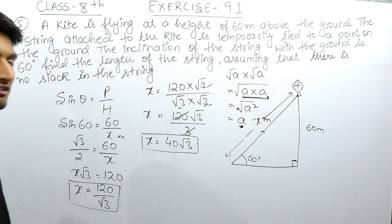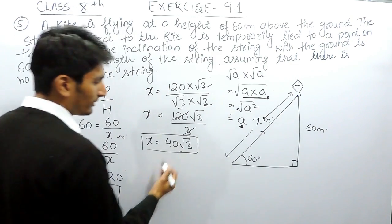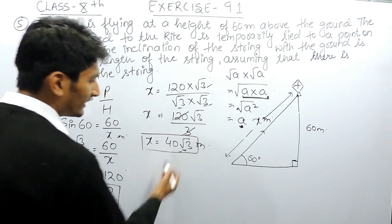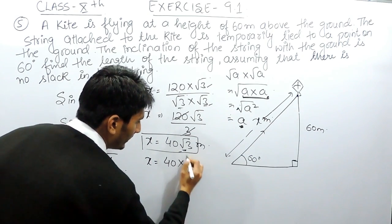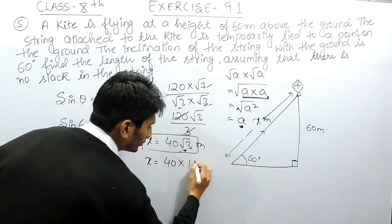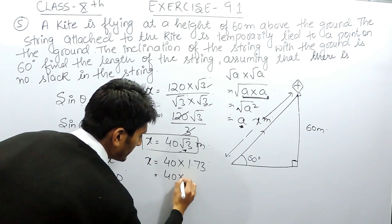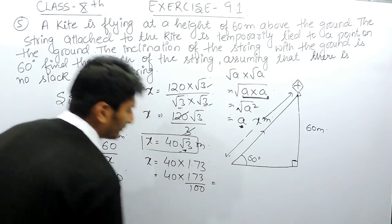This will be the value of this string. The length of the string will be 40 root 3. If you want to find the answer in decimals, you have to multiply this 40 by root 3, and the value of root 3 is 1.73. This is 40 multiplied by 1.73 upon 100.